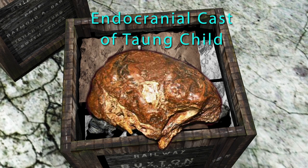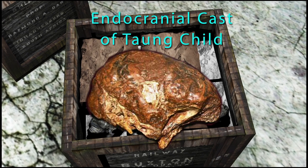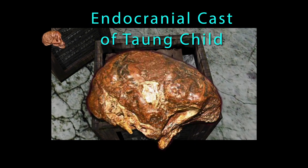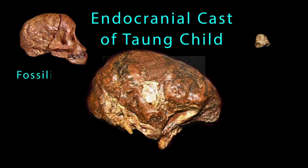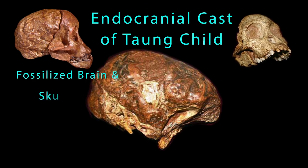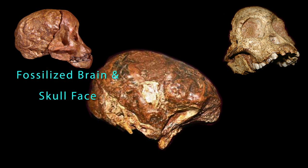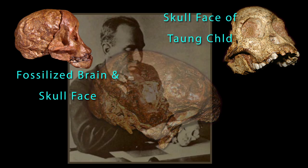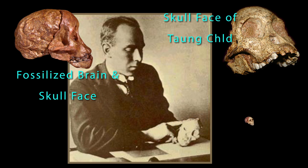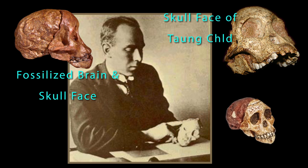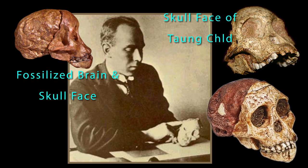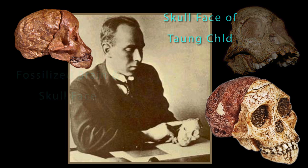As he picks up the fossilized brain, Raymond can see right away that the brain is too large for a baboon or chimpanzee, yet too small to be that of a primitive man. He senses he is holding in his hands something new, something very different.